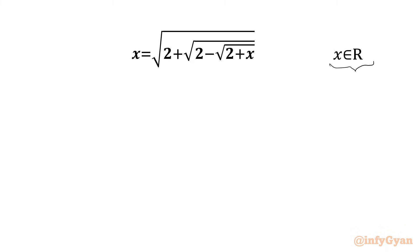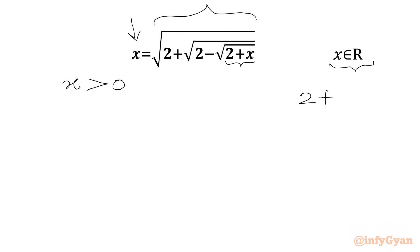Let's get started by writing the domain of the equation first. We have square root involved in the RHS, so our LHS must be positive as our RHS is positive. So we write x must be greater than 0. Now from the RHS, from the innermost radicand, we can write 2 plus x must be positive, so x should be greater than minus 2.